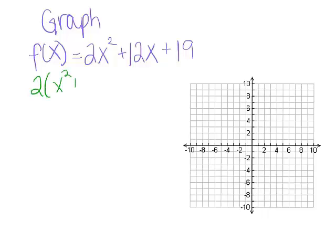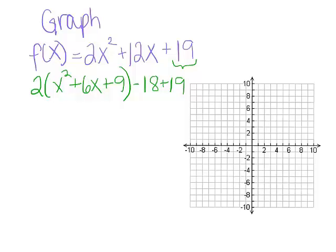2 times the quantity x squared plus 6x, once we factor out a 2. Now we can complete the square with this binomial. Half of 6 is 3, 3 squared is 9. We added 9 to that expression, but that expression is being multiplied by 2, so we really just added 18, which means we now have to subtract 18. And don't forget that plus 19 on the end from the original. We can now factor this perfect square trinomial into x plus 3 squared, and the last two terms — negative 18 plus 19 — combine into plus 1.